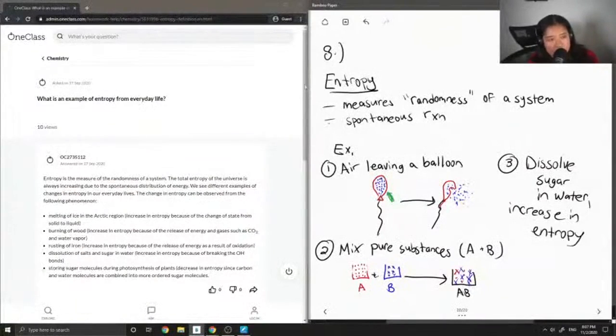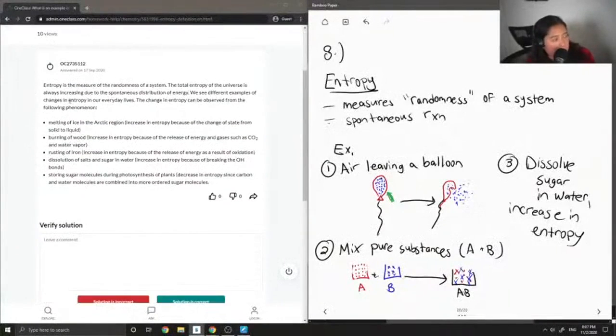Okay, so I think that's enough examples. Let's see what our answer key said: Entropy is the measure of the randomness of a system. The total entropy of the universe is always increasing due to the spontaneous distribution of energy. Examples include: melting of ice in the Arctic region - an increase in entropy because of the change of state from solid to liquid; burning of wood - releasing energy and gases such as CO2 and water vapor; rusting of iron - releases energy as a result of oxidation.